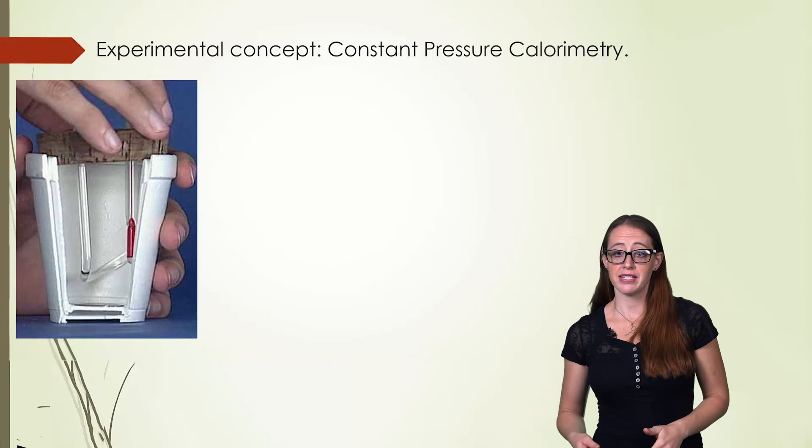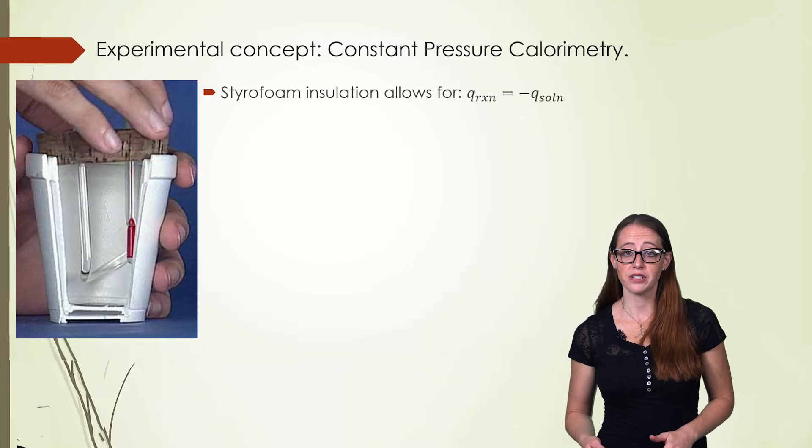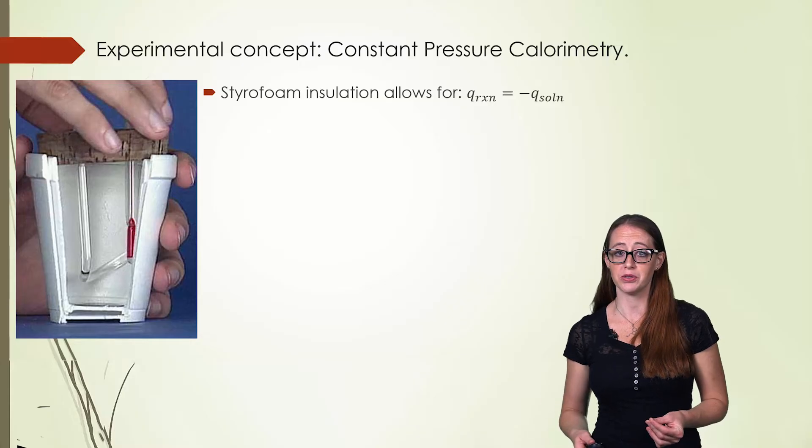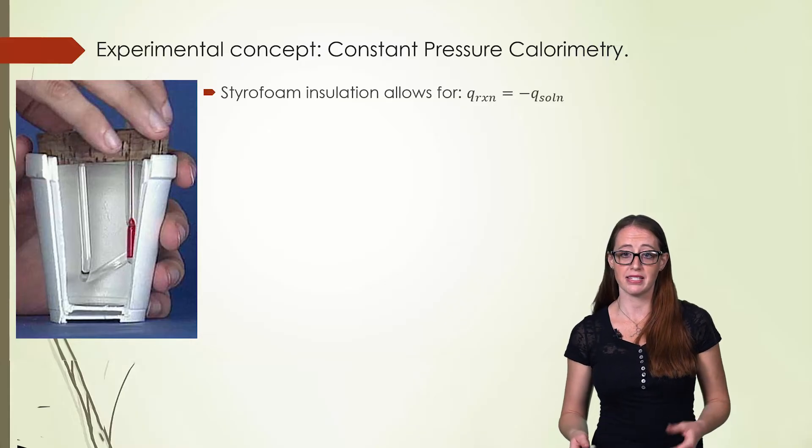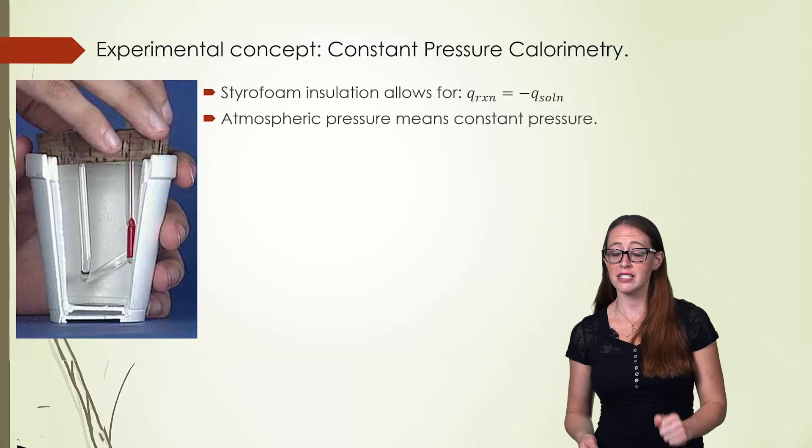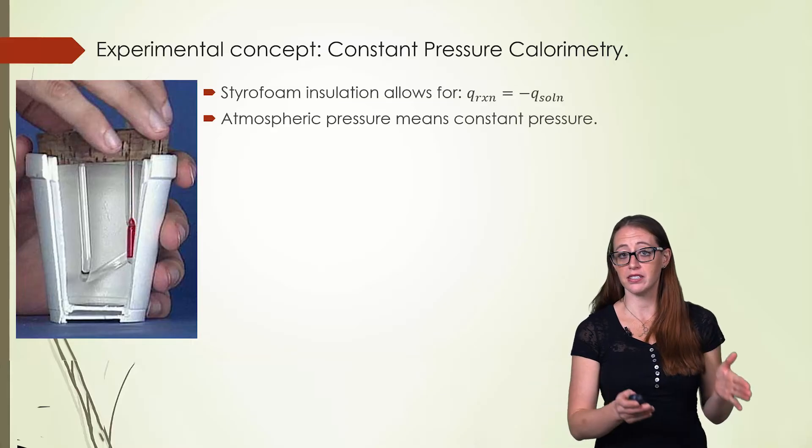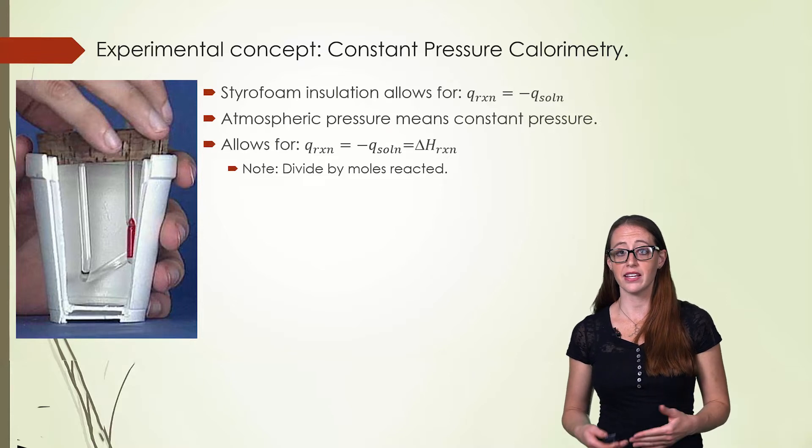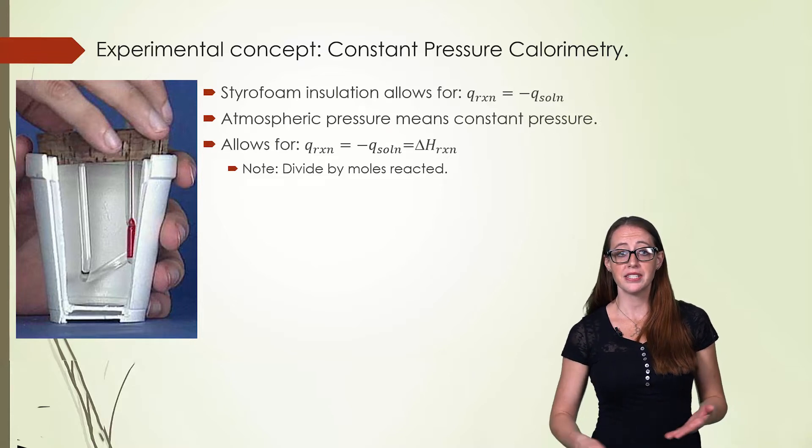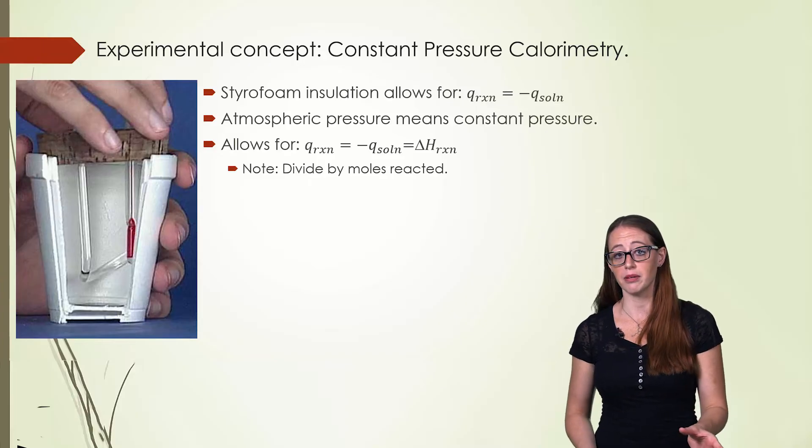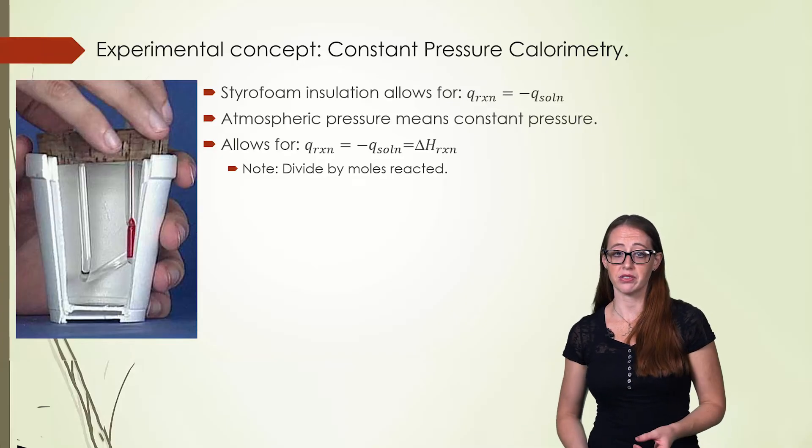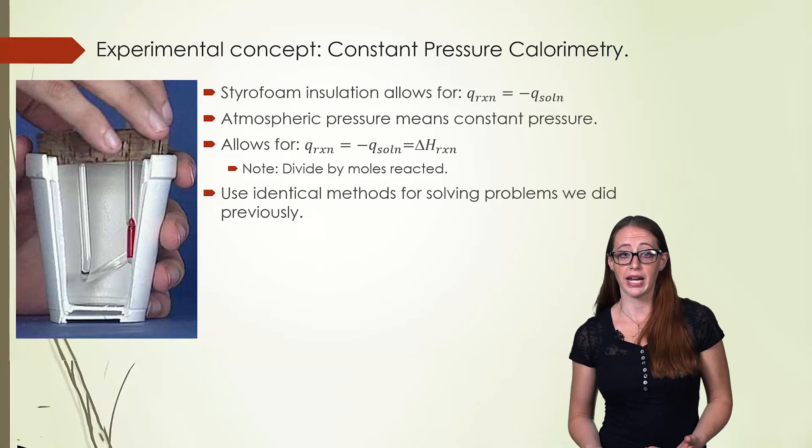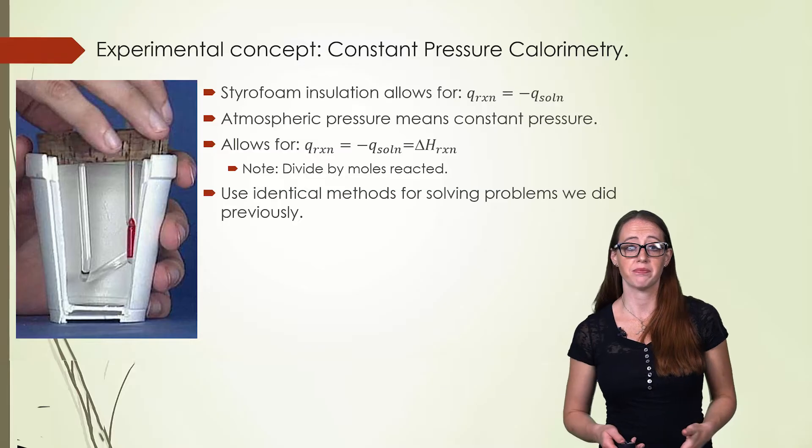Now, as we saw in our previous slide, we can find delta H because our Q of reaction is equal to our negative Q of solution, equal in magnitude opposite in sign. We have our constant pressure, which relates to the derivation that we did in the last slide, because this allows us to say that the Q of the reaction is equal to whatever heat change we measure in the solution in the coffee cup, which is equal to our delta H of reaction.